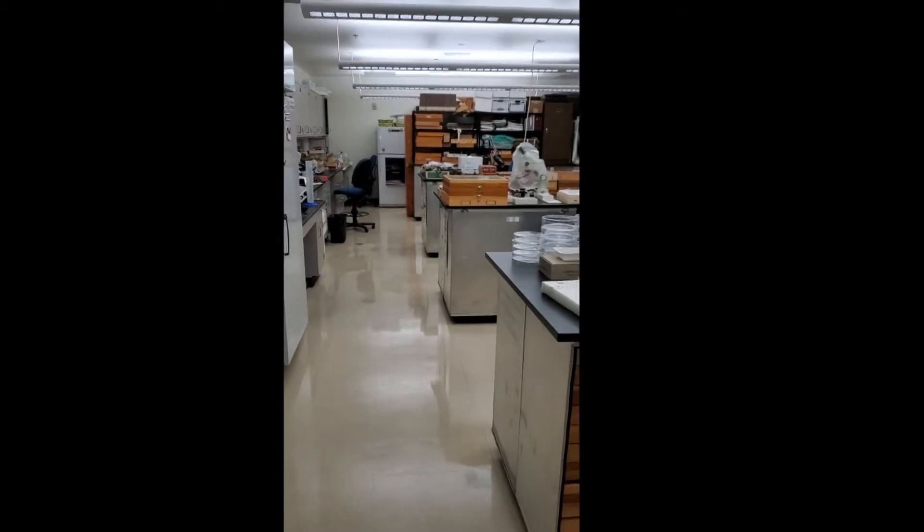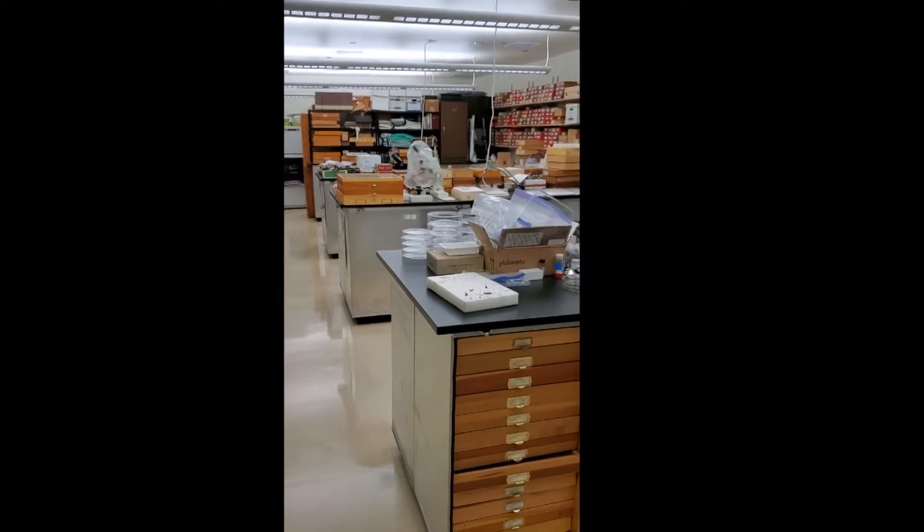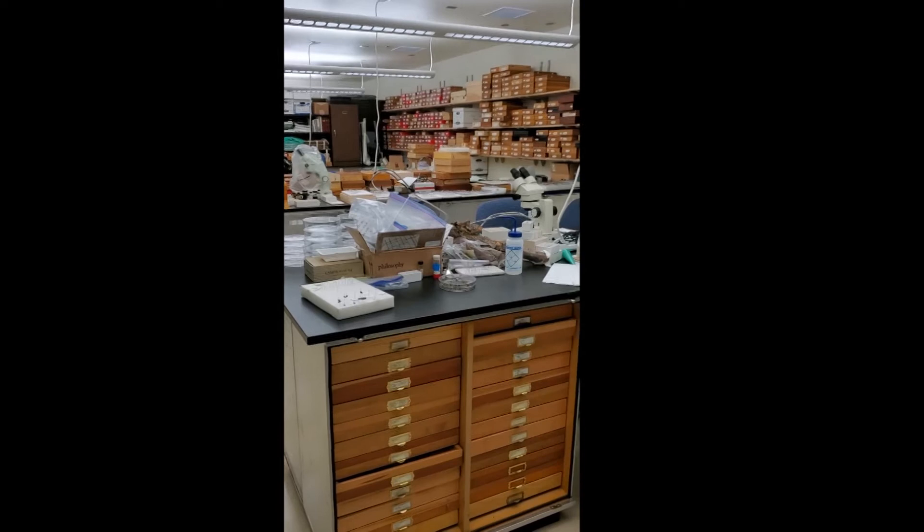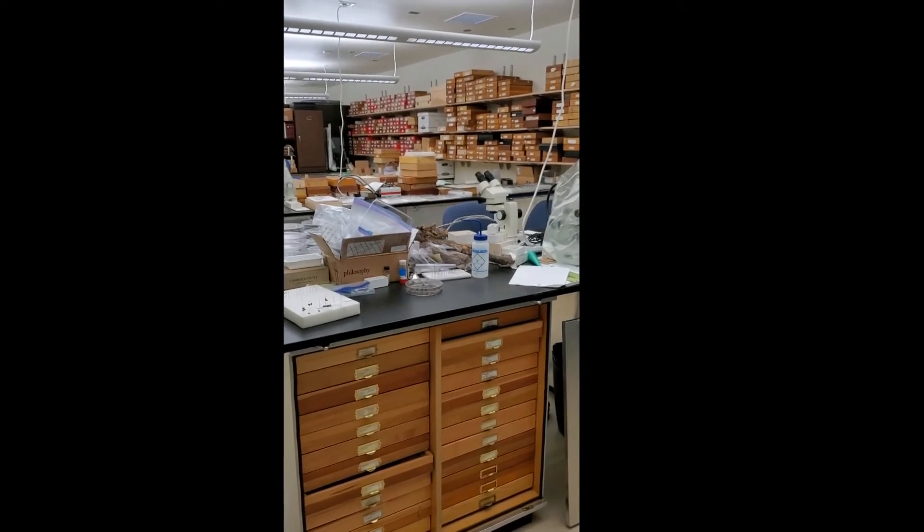This is the insect reference collection for the state of Nevada. We have over 300,000 identified insect specimens in the collection. The boxes on the wall contain specimens that have yet to be identified and moved to the collection.